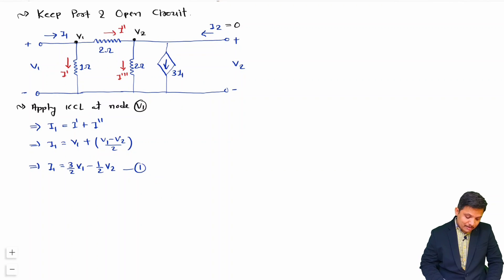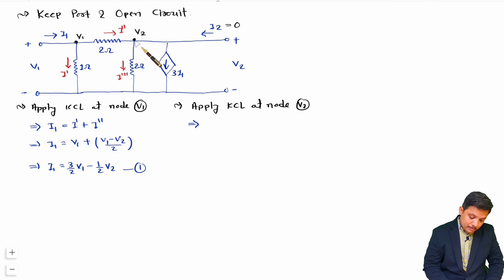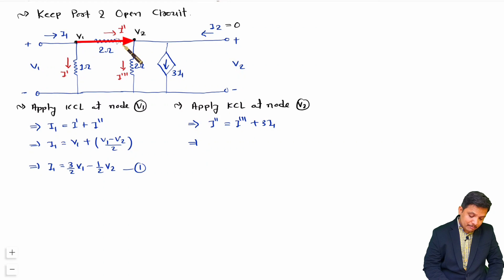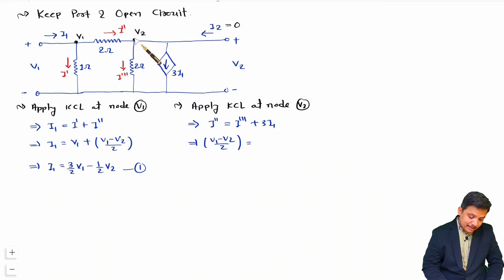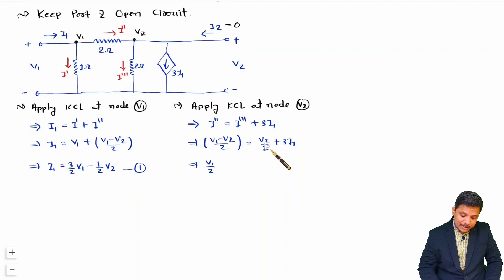Now applying KCL at node V2: entering current is I'' and leaving currents are I''' and 3I1 (the dependent current source). I'' equals (V1 − V2)/2, and I''' equals V2/2. So: (V1 − V2)/2 = V2/2 + 3I1, which gives V1/2 − V2/2 = V2/2 + 3I1. Combining the V2 terms: V1/2 = V2 + 3I1, or equivalently V2 = V1/2 − 3I1. This is Equation 2.